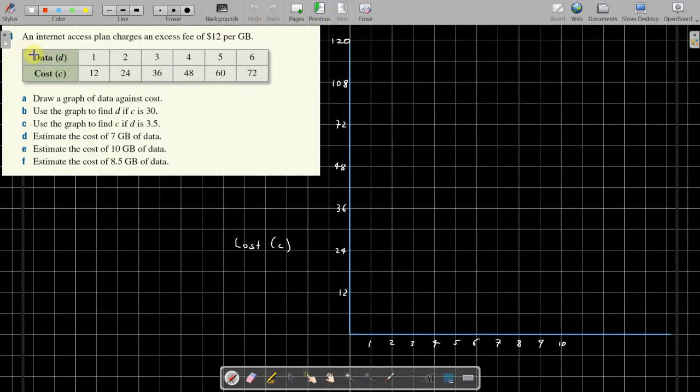Question 4: internet access plan charges fees, an excess fee of $12 per gig. We've got data which is down here, so our data is a horizontal axis. Data d, and cost c. You may have guessed I'm back at school. Data d, cost c, yes. Very good. I've got it all set up here in the room, so I'm just going to plot the points.